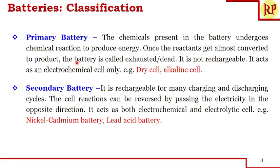If you look at the basic classification of batteries, it is classified as primary and secondary batteries. In a primary battery, we can use it only once — that is, it is not rechargeable. As long as the chemicals are present inside, it undergoes chemical reaction to give us electricity. Once exhausted, we throw it away. The dry cell and alkaline cell are examples of these.